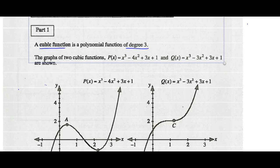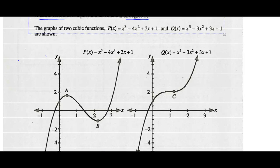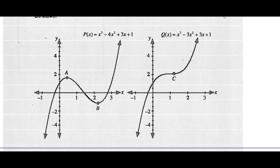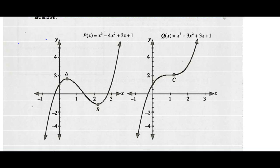The graphs of two cubic functions are given: p(x) and q(x). Let's have a quick look at those. The graphs — these two graphs have similar end behaviors. They're both end behaviors in quadrants 1 and 3. But in between, the graphs have very different characteristics.